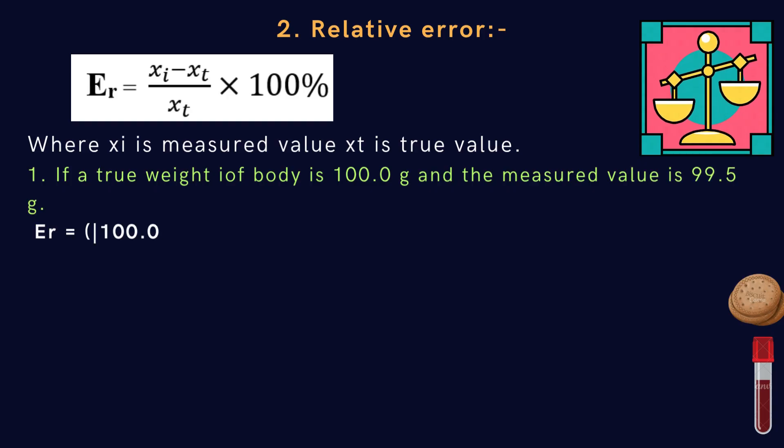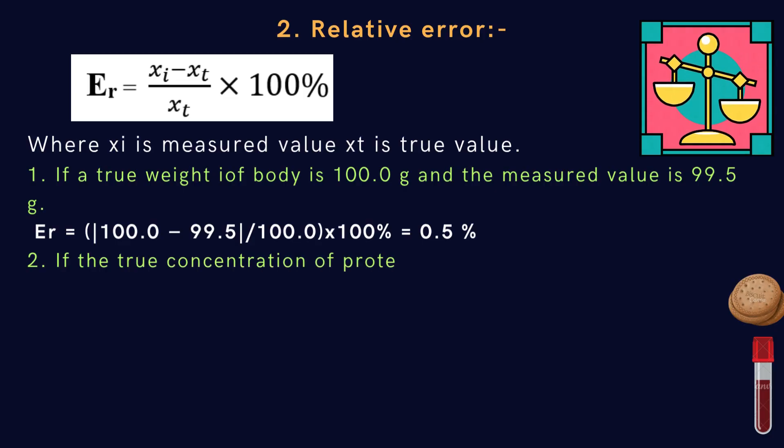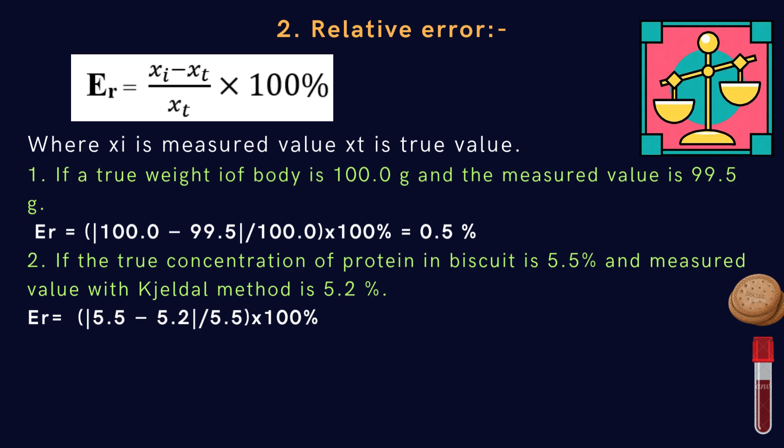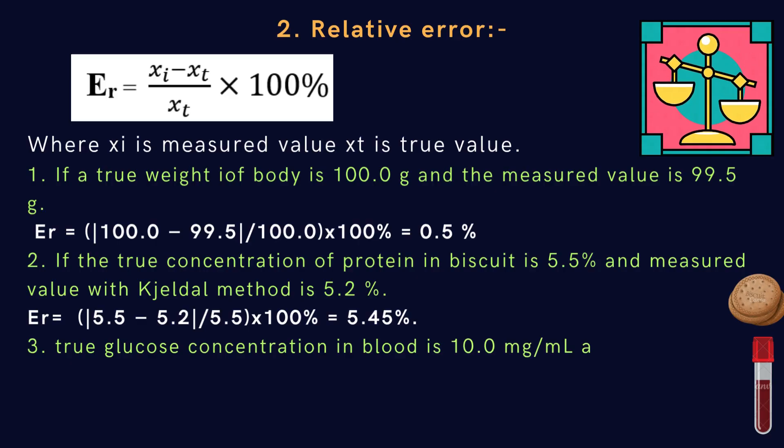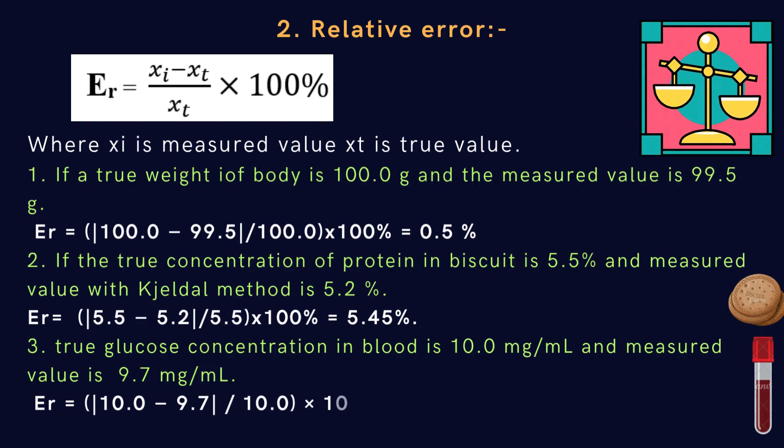Please see the examples of relative error here. First example: if true weight of body is 100 gram and the measured value is 99.5 gram, ER equals 100 minus 99.5 divided by 100 and multiply by 100, which equals 0.5%. Second one: if the true concentration of protein in a biscuit is 5.5% and measured value with Kjeldahl method is 5.2%, ER equals 5.5 minus 5.2 divided by 5.5 and multiply with 100%, which equals 5.45%. Third one: true glucose concentration in blood is 10 mg and measured value is 9.7 mg. ER equals 10 minus 9.7 divided by 10 and then multiply by 100, which equals 3%. Thus, relative error expresses accuracy as a percentage of the true value. It helps compare measurement reliability and shows how close experimental results are to expected values.